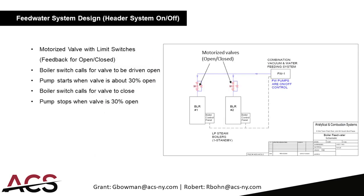In the header feed water system with on/off pumps, all pumps are piped into a feed water header, making them redundant to each other. Between the pump and the header and the boiler there's a motorized ball valve with limit switches for feedback of open/closed back to the controller. The feed water valve modulates based on the float or probe on the boiler itself. There is also a piped bypass around the control valve so that if the control valve fails, you can still run it with just the ball valve in case of emergency.